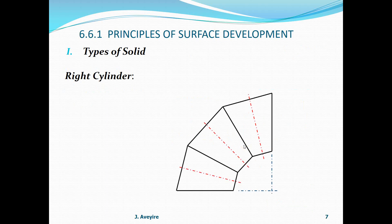Right cylinder - here we have an example of the application of right cylinders being connected. The diameter shows that it is a right cylinder because it is perpendicular. The axes are perpendicular to it.